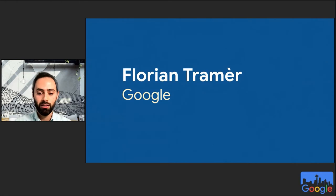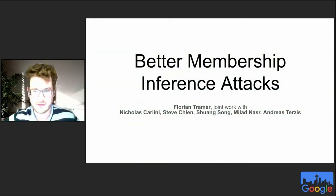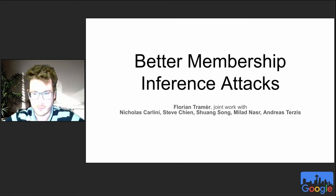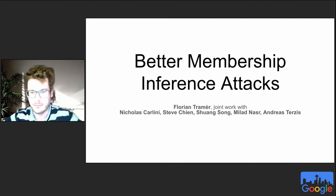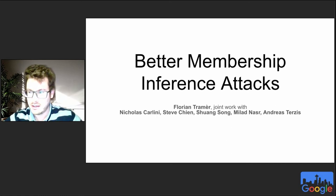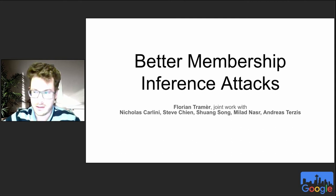Next up, we have Florian from Google. Today I'll be talking about membership inference attacks and some work we've been doing with colleagues at Google on this topic. People in this crowd might care about membership inference attacks because it's the simplest form of privacy attack you could think of for a machine learning model — just being able to tell whether a specific example was in the training set or not. There are clear connections between these attacks and differential privacy, and they're increasingly used as a way to empirically measure or audit the privacy of machine learning models. What we find is that existing attacks are really not great for doing this, because they very severely underestimate the privacy leakage.